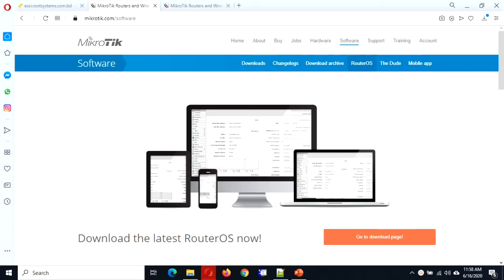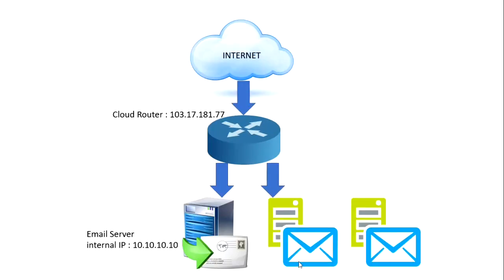Hello viewers, welcome back to my channel sudutoolbox.com. Today we will try to deploy a MikroTik RouterOS into our ESXi VM, which will be a cloud router. We will deploy a cloud router and behind that cloud router we will set up a few servers, like an email server with a private IP. The main purpose is to utilize one public IP address for multiple servers serving through the same public IP address.